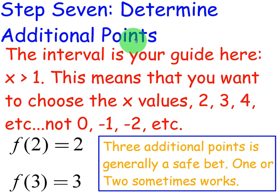Step 7, determine additional points. The interval is your guide here. x is bigger than 1. This means that you want to choose the x values 2, 3, 4, etc., not something less than 1, like 0, negative 1, negative 2, etc.